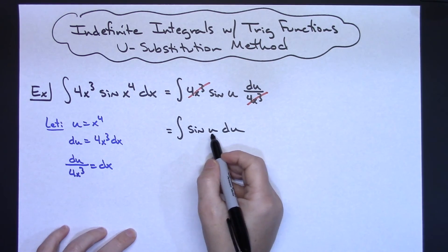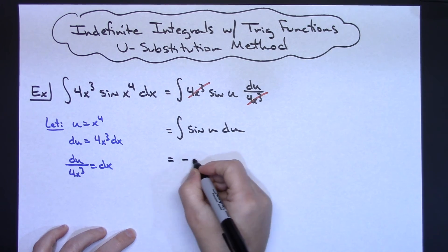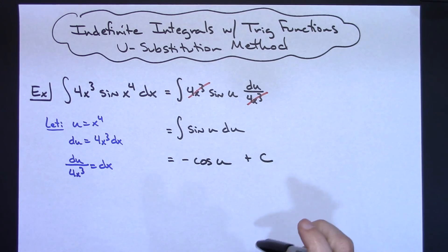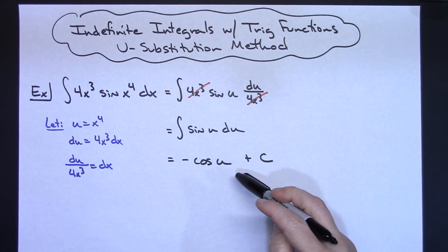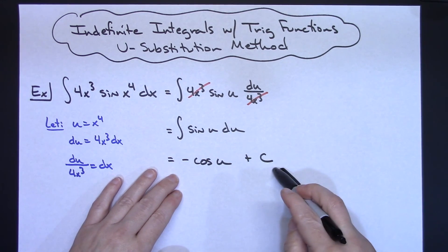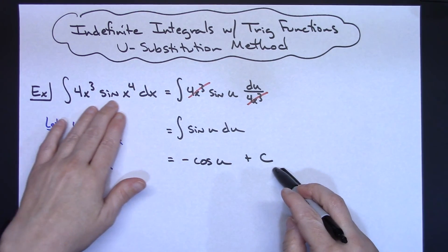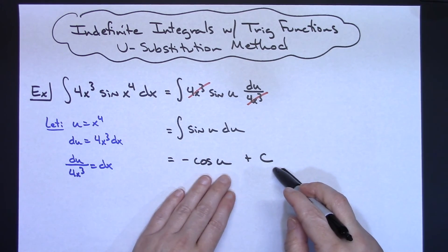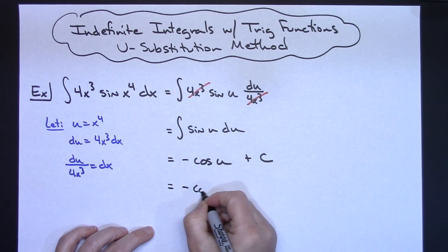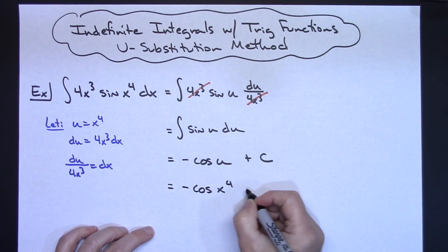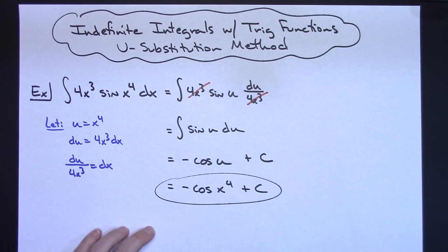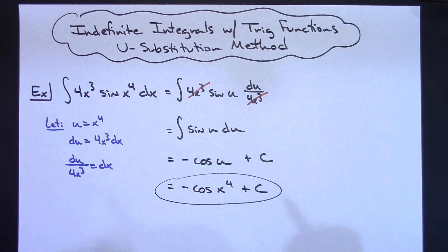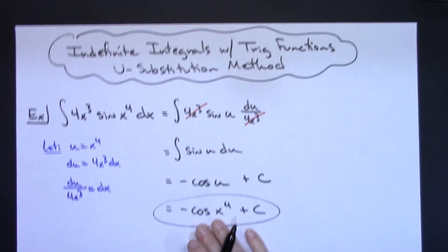Integrating sin(u) gives me −cos(u), and we can't forget the +C since this is an indefinite integral. My answer is in terms of u, but the original equation was in terms of x, so I substitute back: the answer is −cos(x⁴) + C. You always want to make sure your final answer is in the same variable as what you originally started with.